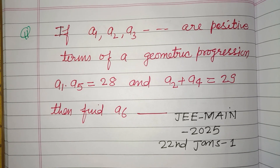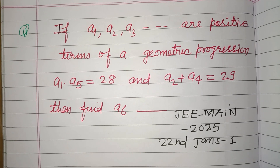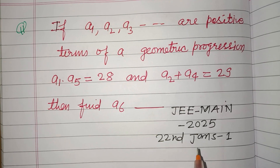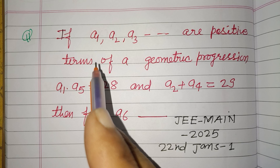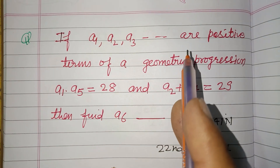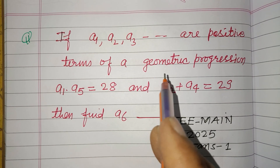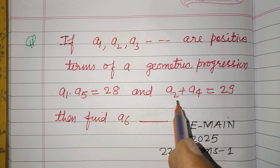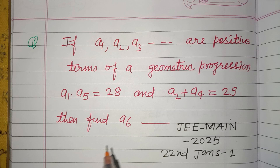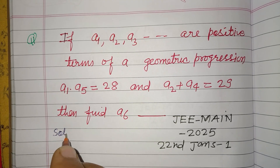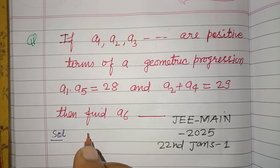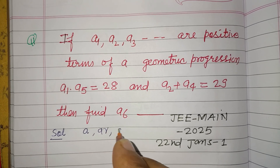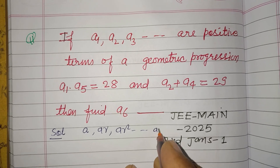Hello viewers, warm welcome to this YouTube channel. This is a question from JEE Main 2025, 22nd January, Shift 1. If a1, a2, a3 are positive terms of a geometric progression, a1 × a5 = 28 and a2 + a4 = 29, then find a6. Let the geometric progression be a, ar, ar², and so on, ar^(n-1).